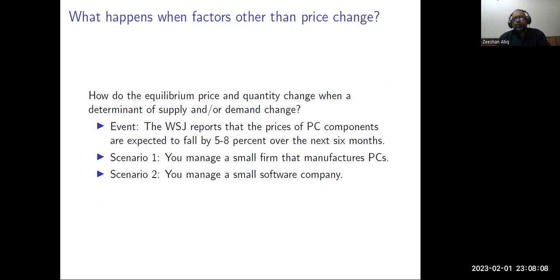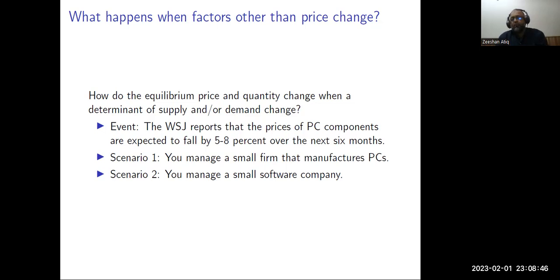How does the equilibrium price change when a determinant of supply or demand changes? Consider this example: The Wall Street Journal reports that the price of PC components is expected to fall by 5% to 8% over the next six months. The components used by PC manufacturers are going to go down in price by 5% to 8%. We consider two scenarios: if you are managing a small firm that manufactures PCs, and if you are a manager at a firm producing software for computers available in the market.